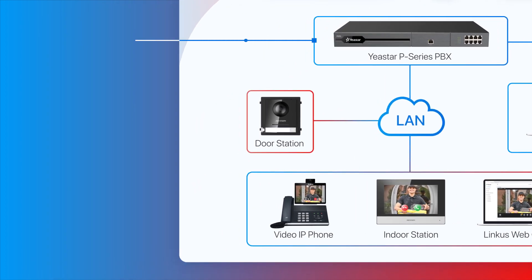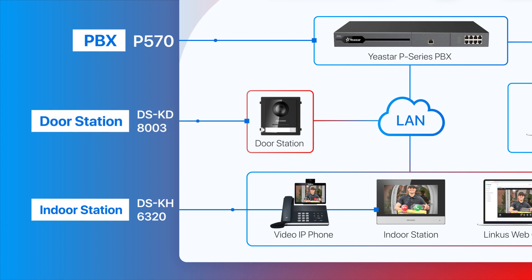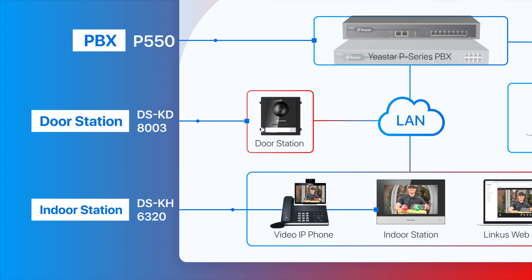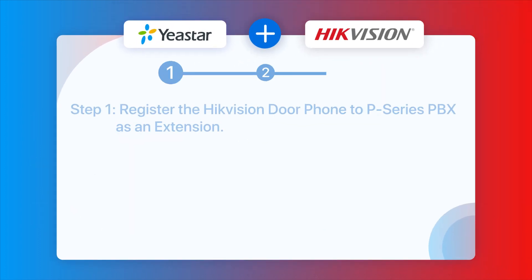First of all, we use Yeastar P570, Hikvision DS-KH6320 indoor station, and DS-KD8003 door station to realize the integration. For P-Series PBX, we can also use P550 or P560. And for the Hikvision door phones, it is necessary to pick a model that supports SIP. We can confirm with our dealer to see which models are suitable for the integration.